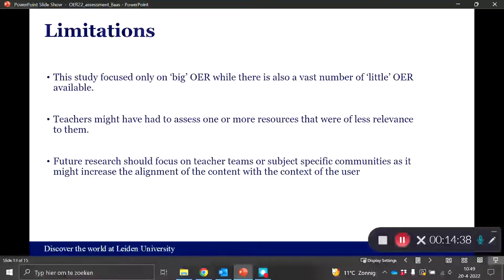Of course there are some limitations as well. We only used big OER, like the four resources they received were either open textbooks, open online courses, or open courseware. And there is also of course a vast number of little OER available, and it might be that the findings will be different for little OER compared to big OER. It could also be that teachers had to assess one or more resources that were of less relevance because teaching subjects might differ and have a different focus across schools. That's why we also recommend the practical recommendation to assess OER within their own teacher teams and to have a conversation about it. And this could be, the alignment of the resource could be further increased if future research is undertaken within teacher teams or subject-specific communities. And it's really interesting to further explore the concept of quality within those specific contexts.